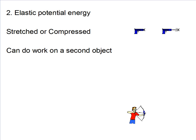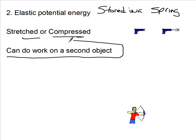A lousy potential energy is what energy we have that is stored in a spring. That's all springs do is store and release energy. We can stretch a spring or compress a spring and we're storing energy. This stored energy can do work on a second object.